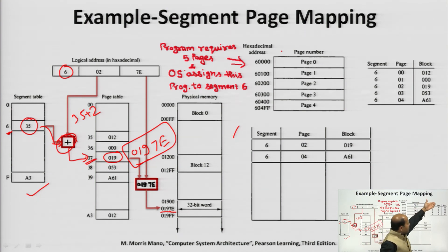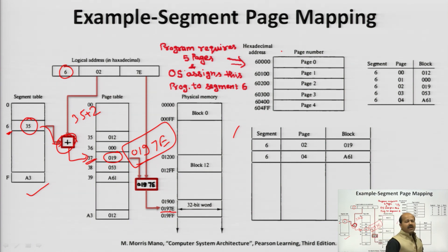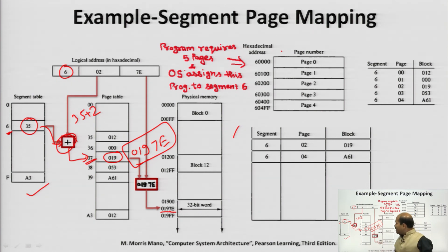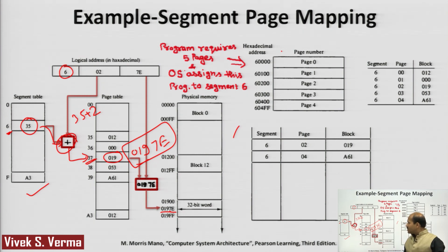In the TLB, 5 segment-page-block entries are stored in a single table for fast lookup. This is a fast scheme to provide a particular word to the processor. Segment page mapping supports dynamic programming, multiple programs, and variable-length segments. The length of each segment may vary depending on the logically related data stored within it.